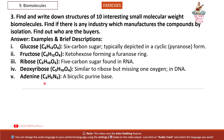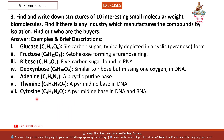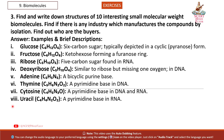5. Adenine (C5H5N5): a bicyclic purine base. 6. Thymine (C5H6N2O2): a pyrimidine base in DNA. 7. Cytosine (C4H5N3O): a pyrimidine base in DNA and RNA. 8. Uracil (C4H4N2O2): a pyrimidine base in RNA.